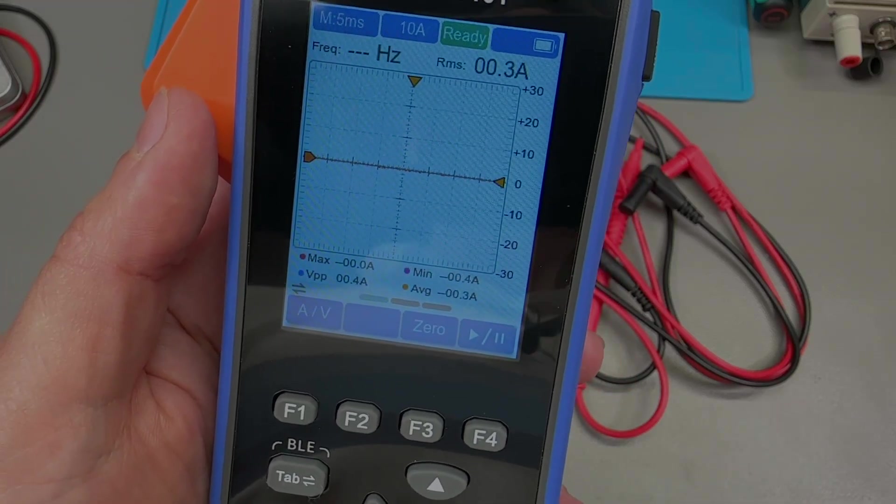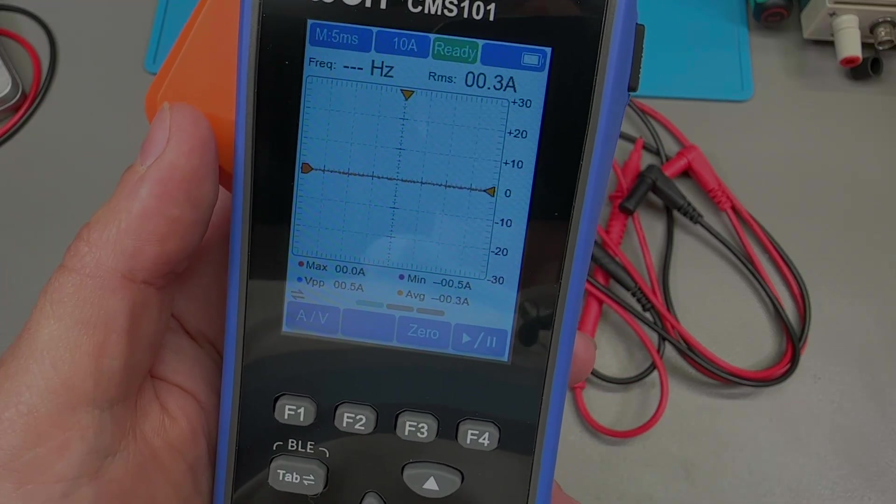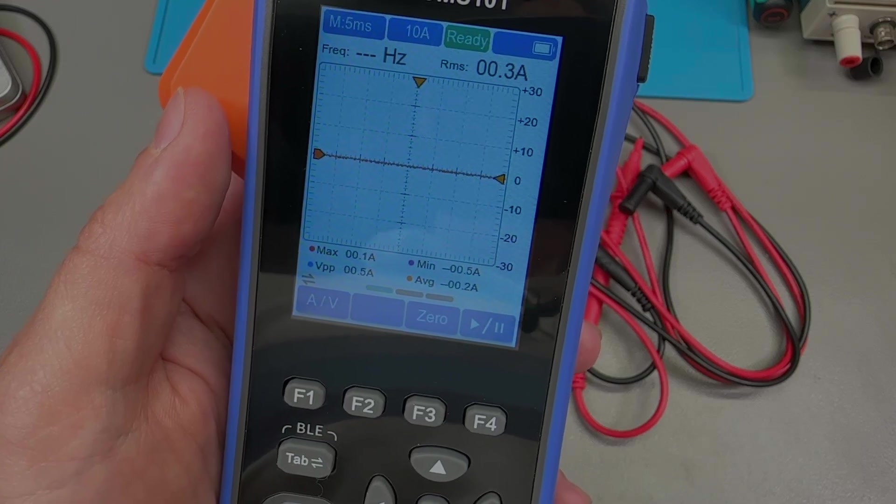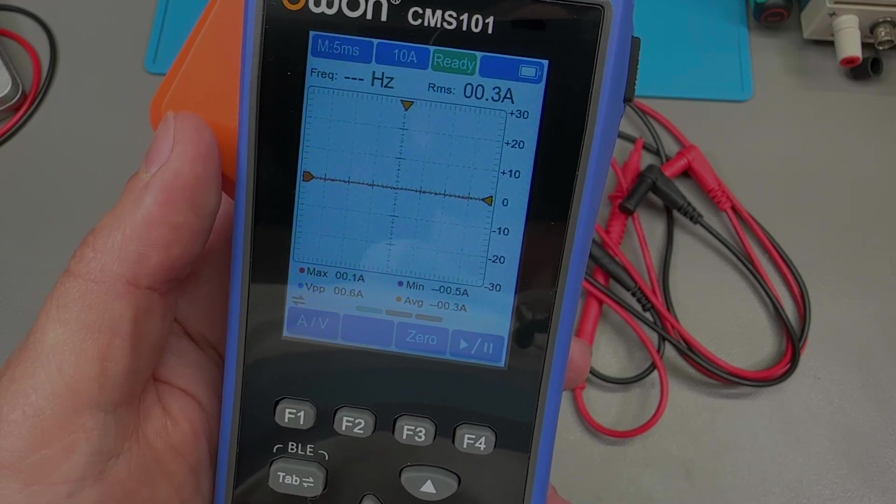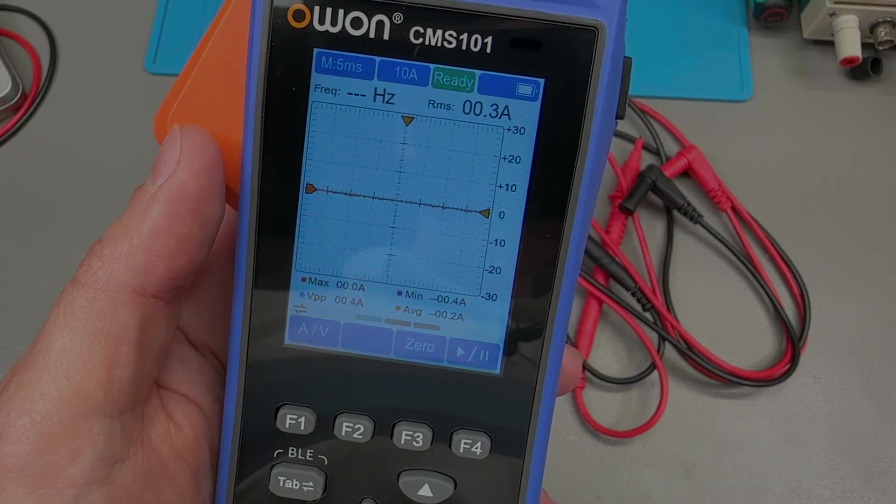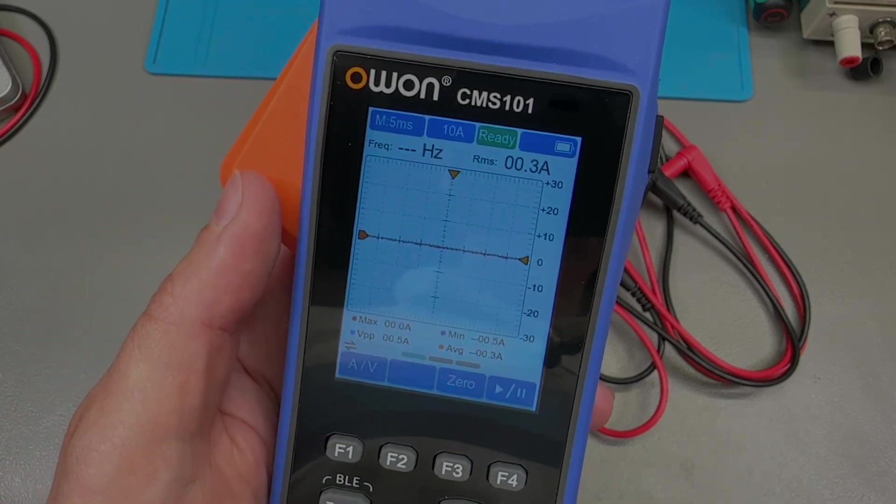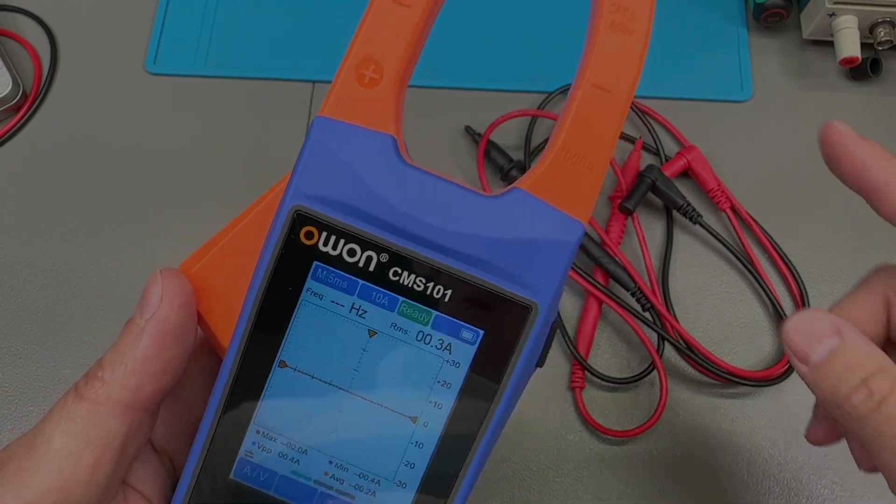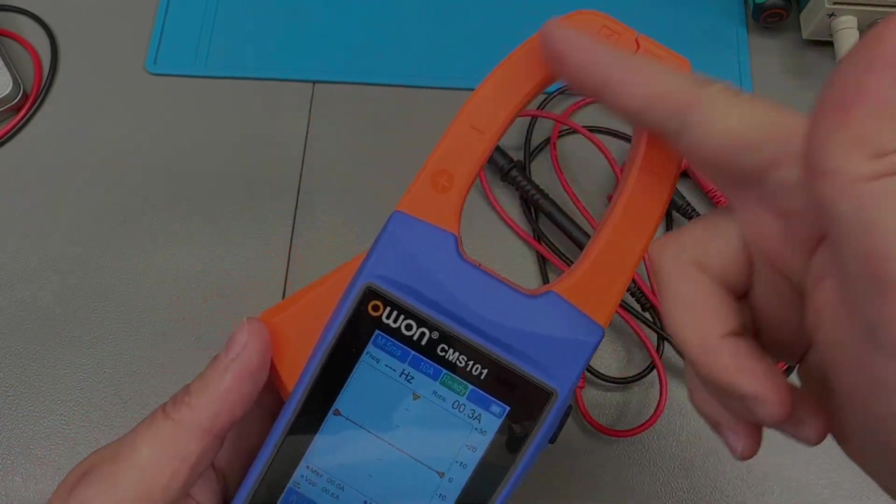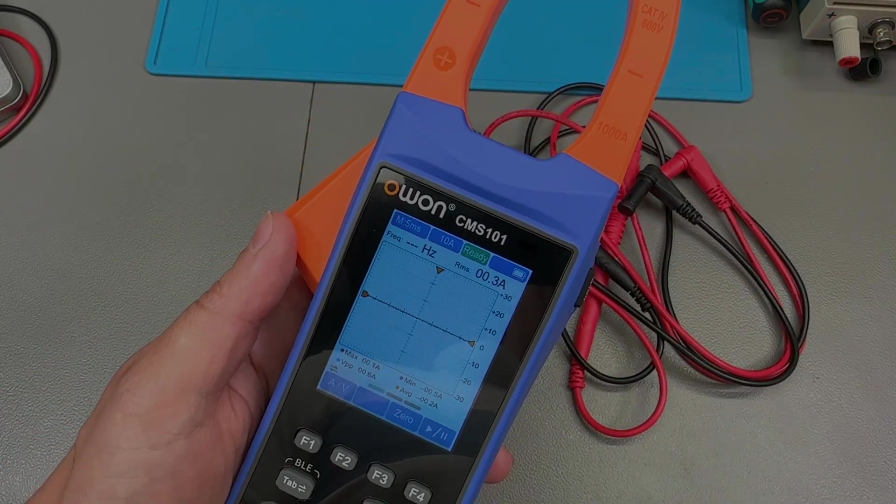Personally, I would have liked to see something like a 500 kilohertz bandwidth on the current waveform, because then it would have been really nice to see details when you look at a DC to DC converter maybe. But I do understand that technically that's much harder to obtain through this type of clamp sensing technique.